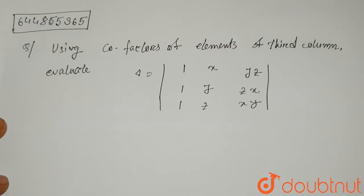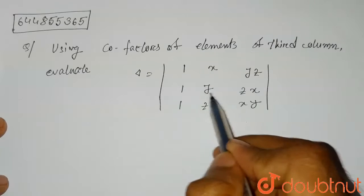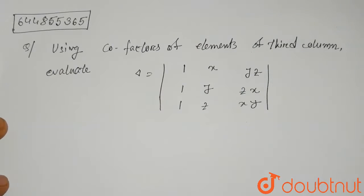Hello everyone. The question is: using cofactors of elements of the third column, evaluate delta equals the determinant with entries one, x, yz; one, y, zx; one, z, xy. So first of all, let's find out the cofactors of the elements of the third column.